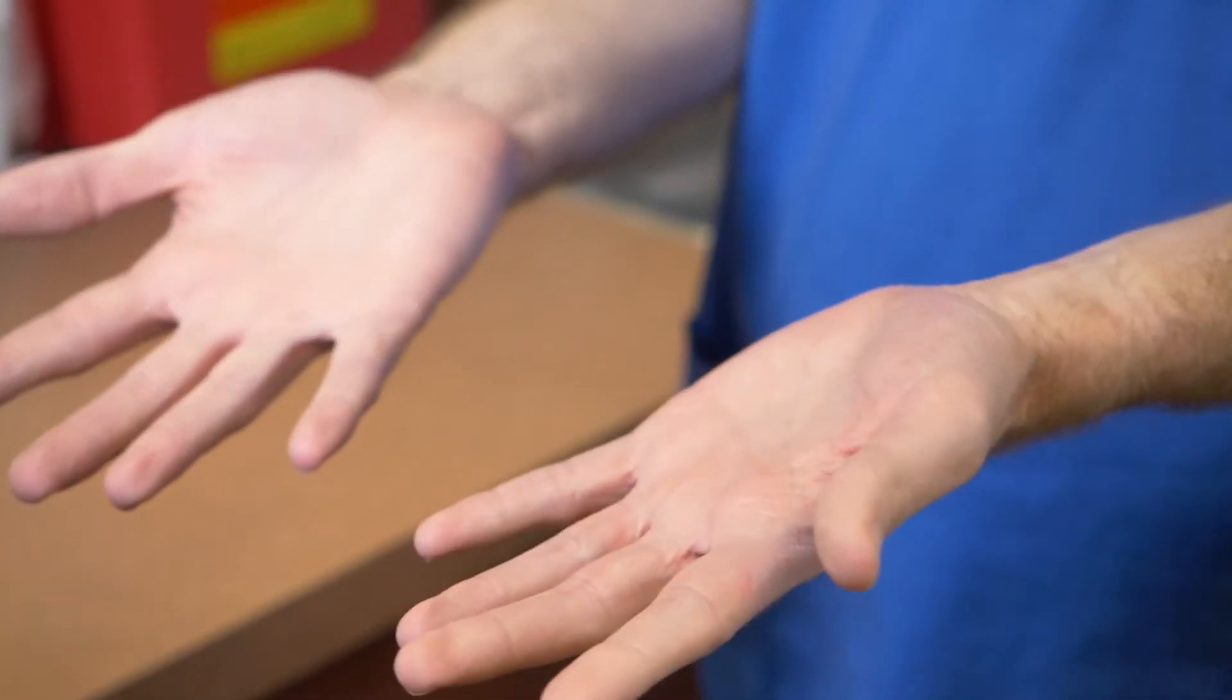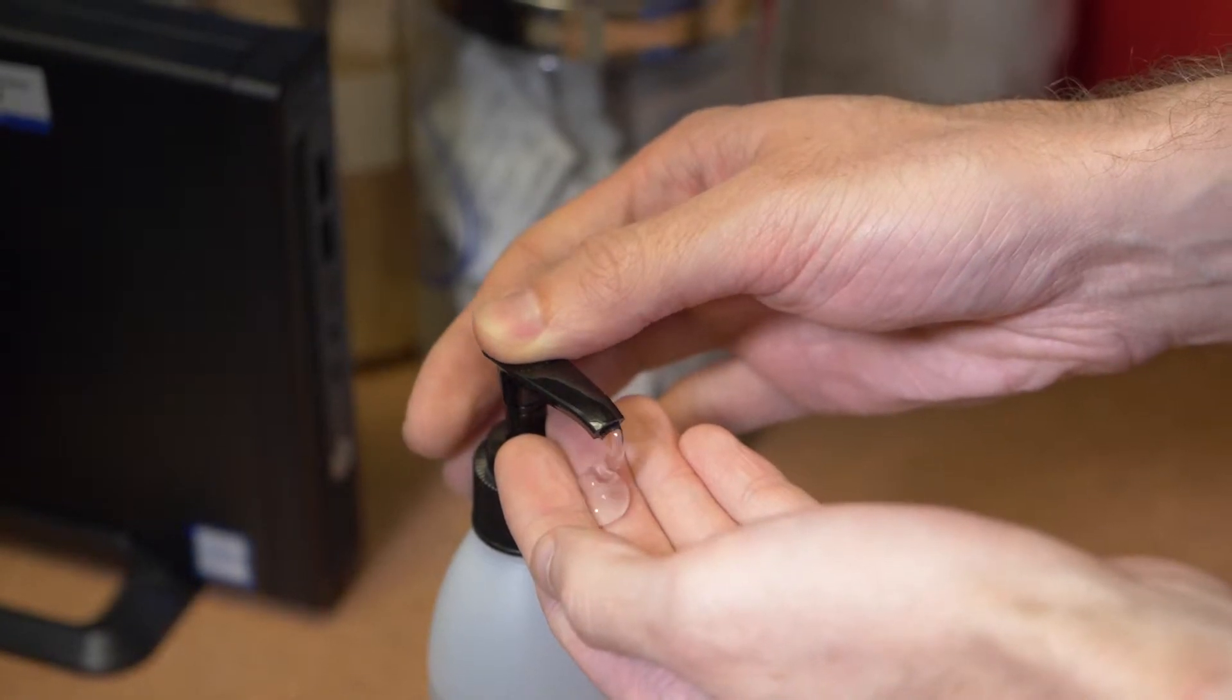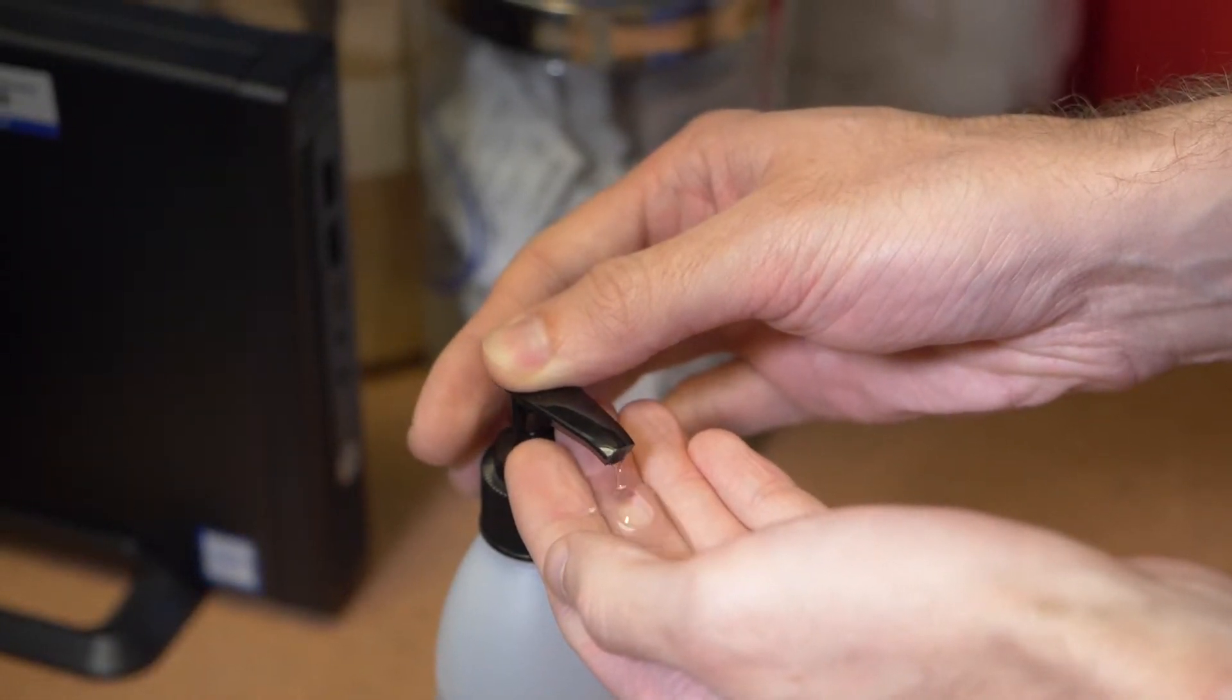Assure that there is no gross contamination of the hands. Dispense two to three milliliters of the hand rub into the palm of your hand. There must be enough to cover the surfaces of all of your fingers as well as the front and back of your hands.